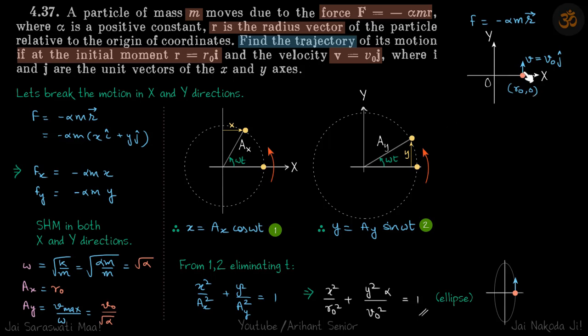Now in y direction you can see that it's just crossing the mean position with velocity v naught. So if we take the y direction like this, it is just crossing mean position at t equals 0 and it's going like this. So now you can see that this is the position y when it's turned by omega t, so y will be ay sin omega t.